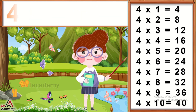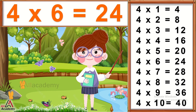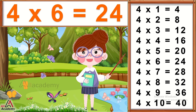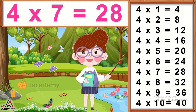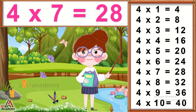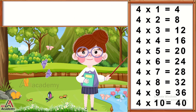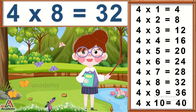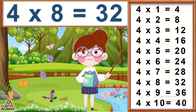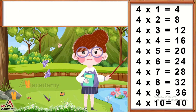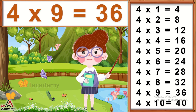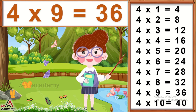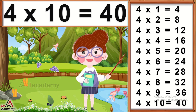Four sixes are twenty-four. Four sevens are twenty-eight. Four eights are thirty-two. Four nines are thirty-six. Four tens are forty.